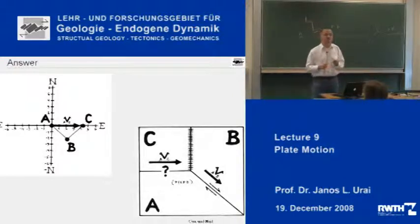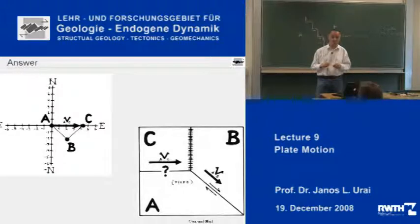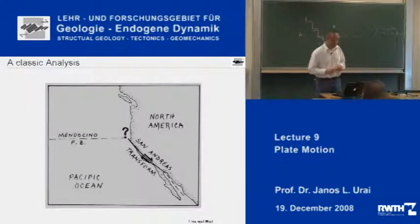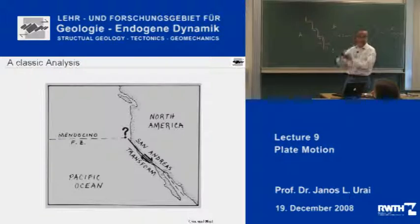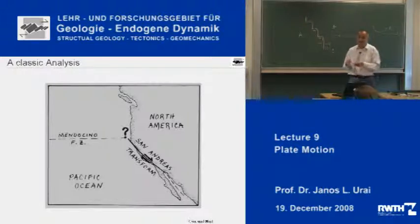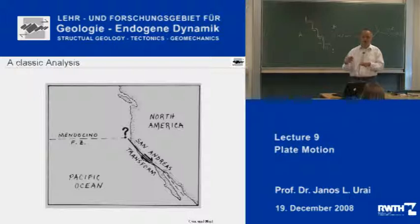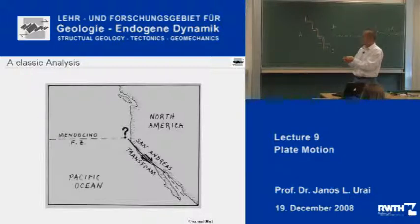This analysis has a very famous example. The example was done by Tanya Atwater, who is now a professor at one of the Californian universities. She considered, in the 1970s, the following problem. In California, geologists know the San Andreas Fault — it is a big dextral transform fault on land, and the geology has been studied in great detail. But the San Andreas Fault, just north of San Francisco, goes into the sea. At that time, geoscientists didn't really know what happened there. They knew that there was a fracture zone there — the Mendocino fracture zone.